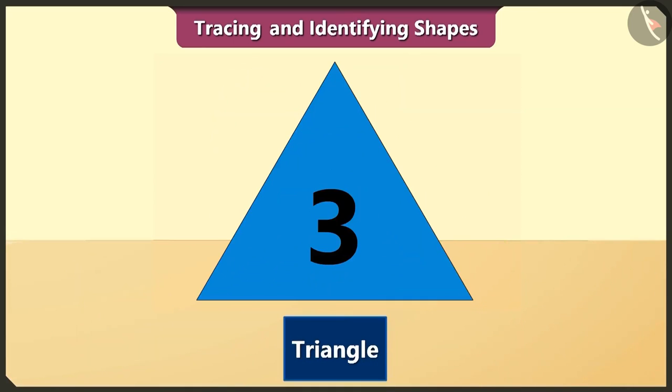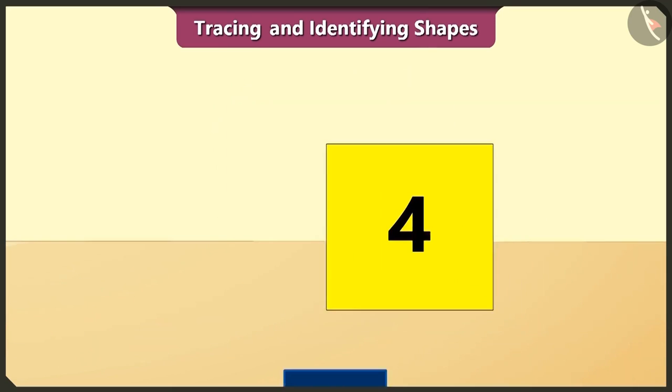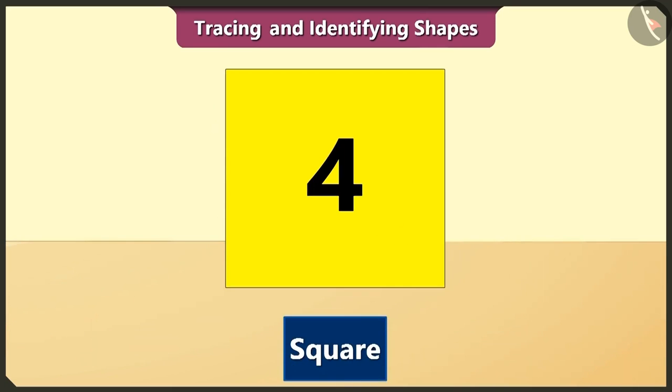The triangle is third in order. A triangle has three sides. The square is fourth in order. The length of all its four sides are the same.